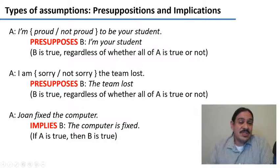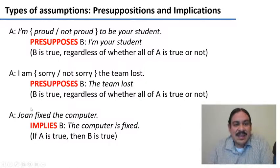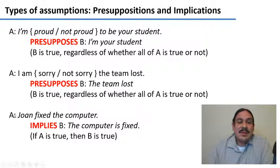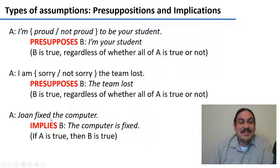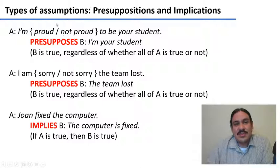There's a slightly different relationship, which is an implication. In an implication, if A is true, B is true. For example, 'Joanne fixed the computer' implies that the computer is fixed — because if A is true, B has to be true as well. But if we negate it — 'Joanne did not fix the computer' — it would mean the computer is not fixed, so B is now false. This is the key difference: in a presupposition, we extract information regardless of the truth of the statement, but for implications, we need the statement to be true before we can derive the information that follows.